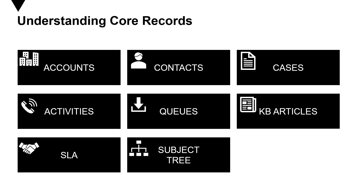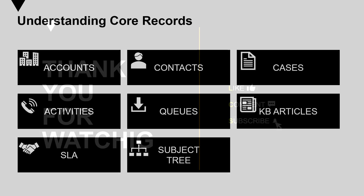The subject tree helps you categorize various things like service cases, KB articles, product catalog items, and sales literature. It makes it easy for the user to search and use information to resolve cases. These are the terms that you need to get acquainted with before you can actually work with Dynamics 365 Customer Service Hub.